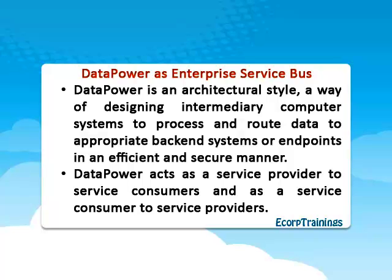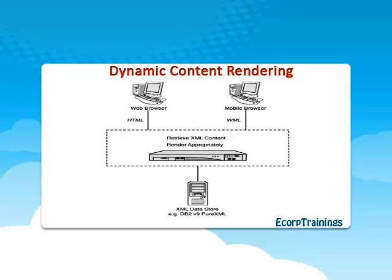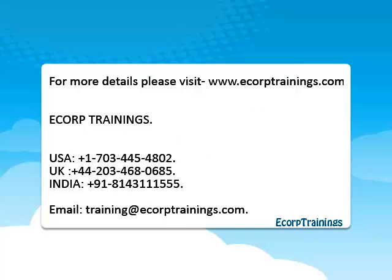Implementations of routing and mediation are configured, often using processing policies created from out-of-the-box processing actions, to determine appropriate service providers to service specific requests. An interesting topology is dynamic content rendering: DataPower can be used to transform content into other markup languages by writing style sheets. DataPower is capable of processing transformations at extremely high speeds, making dynamic processing easy to render the relevant markup depending on the type of device.